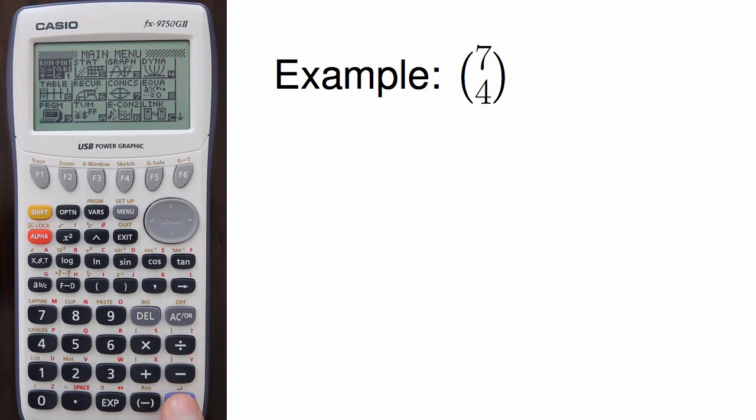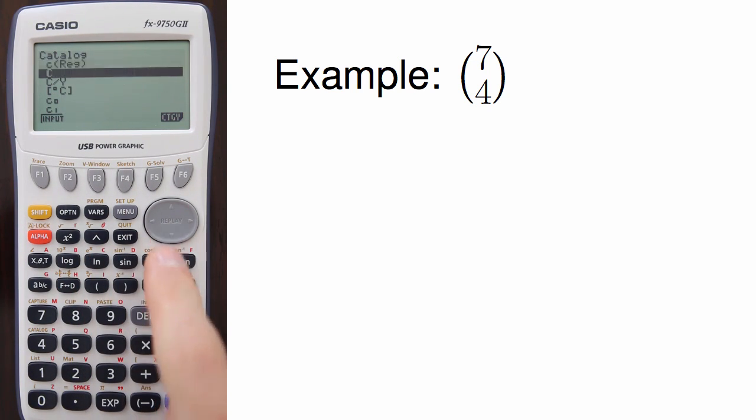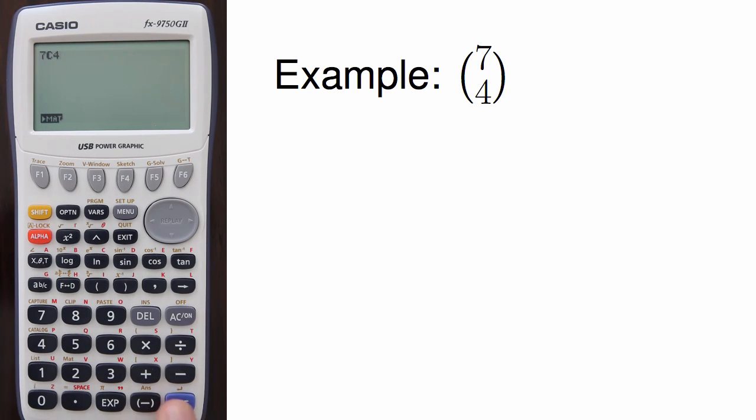First, I go to the Run Mat section. Then I can enter a value for n. Then I can go to Catalog by hitting Shift 4, choose the bolded C, and finally enter a value for x.